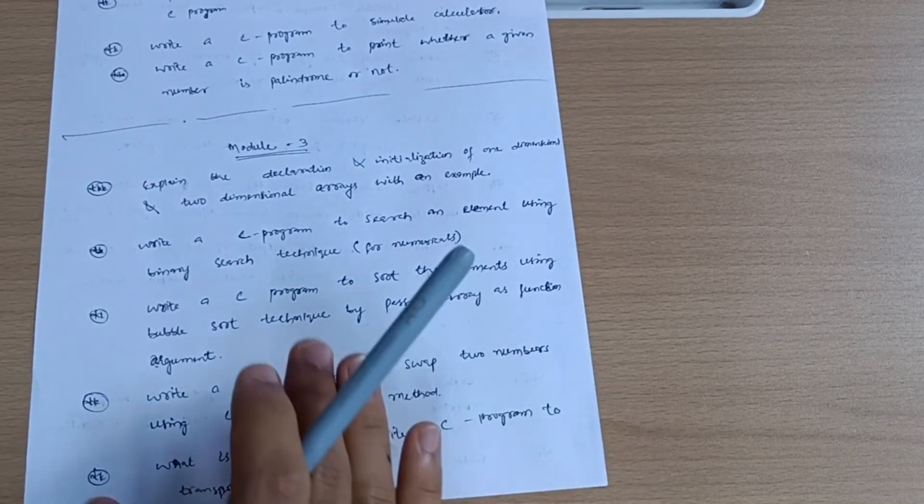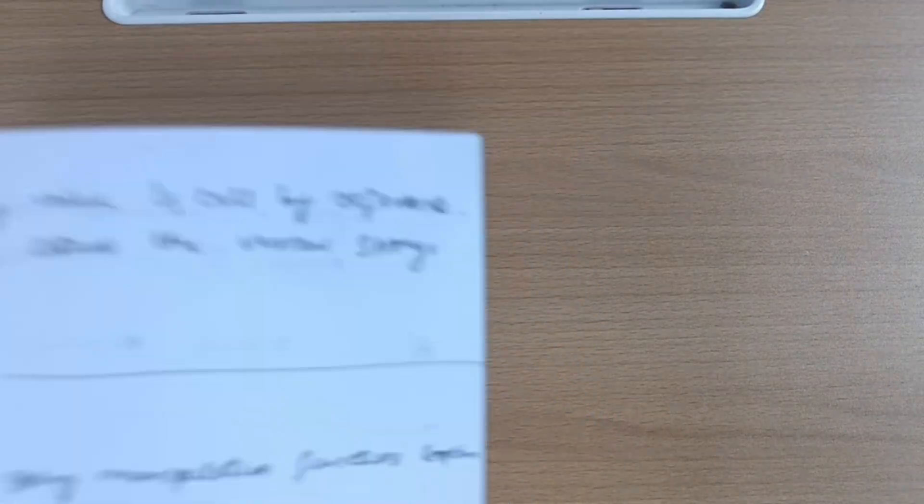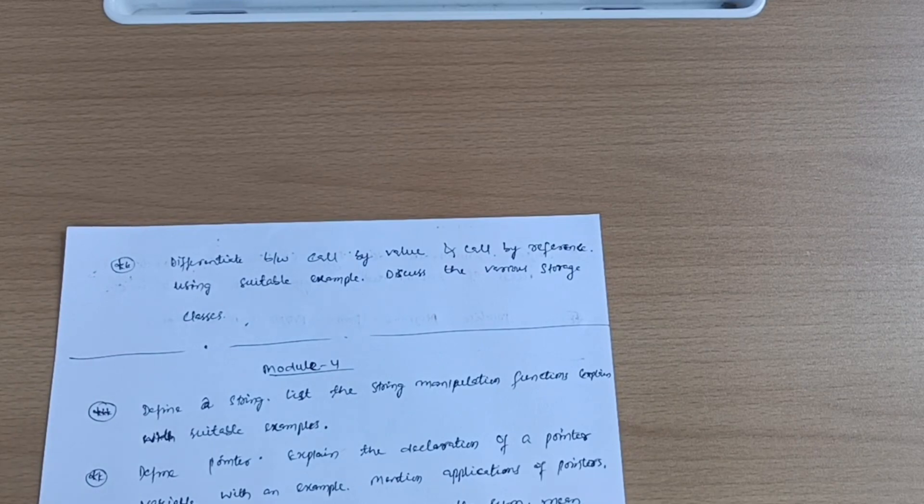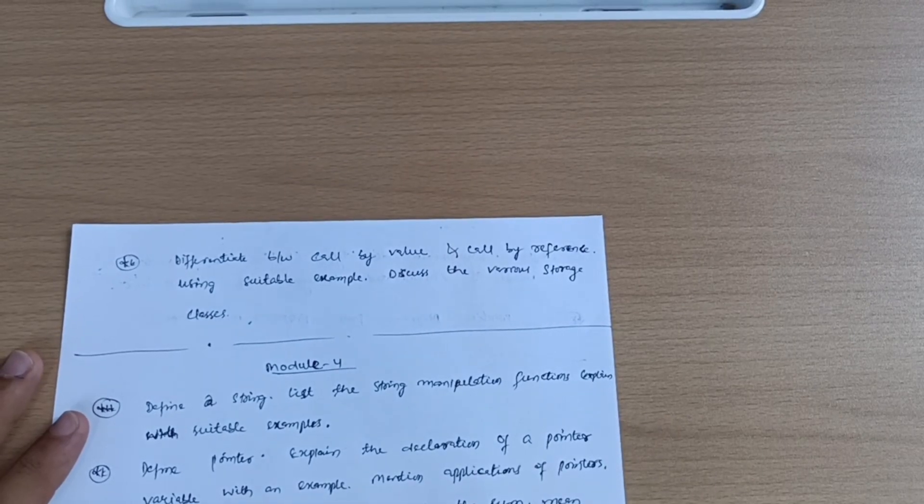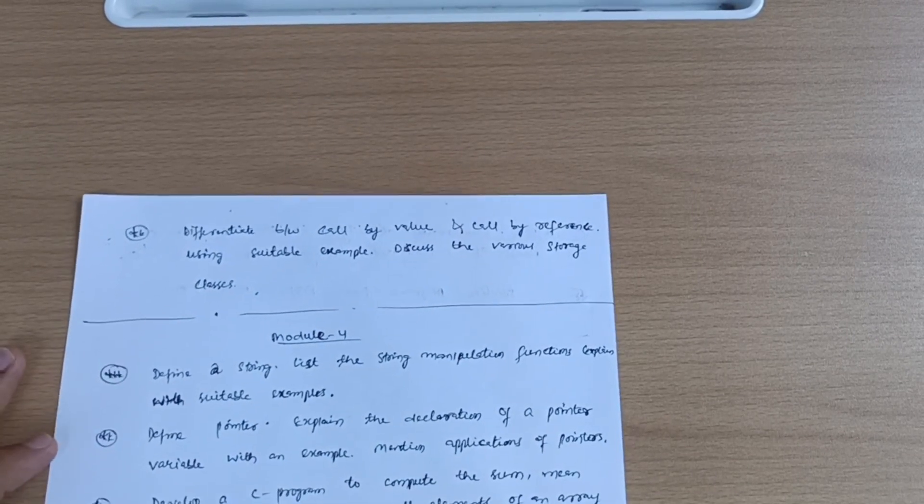Differentiate between call by value and call by reference using suitable example. Discuss the various storage classes. This is all about module third.